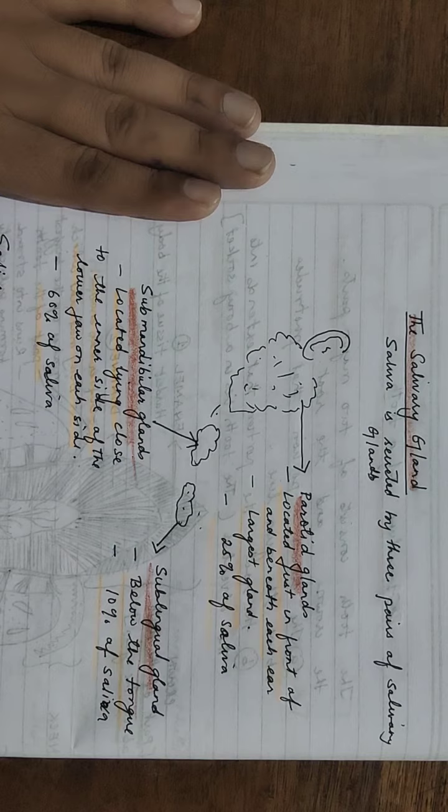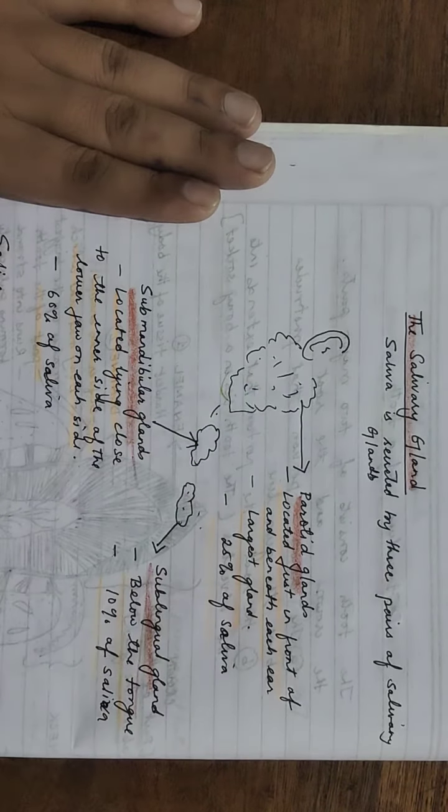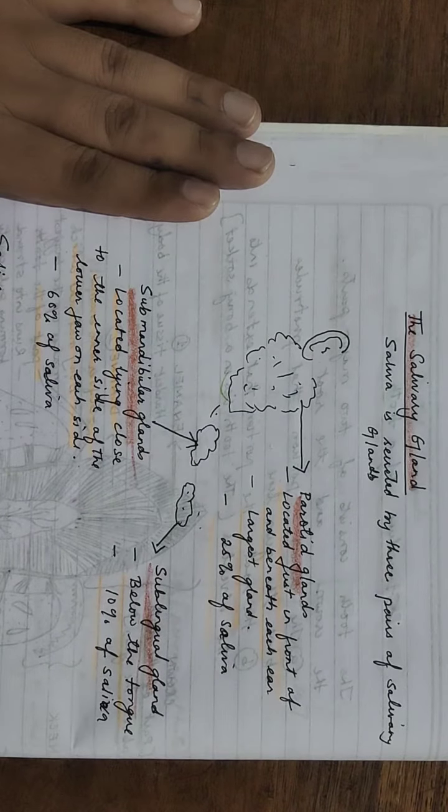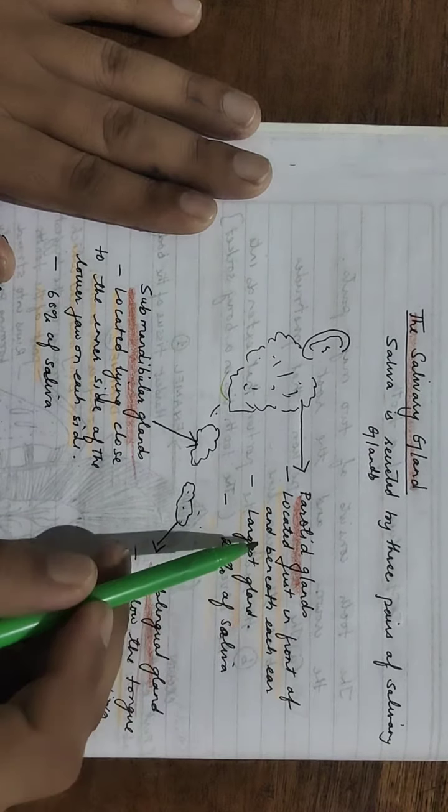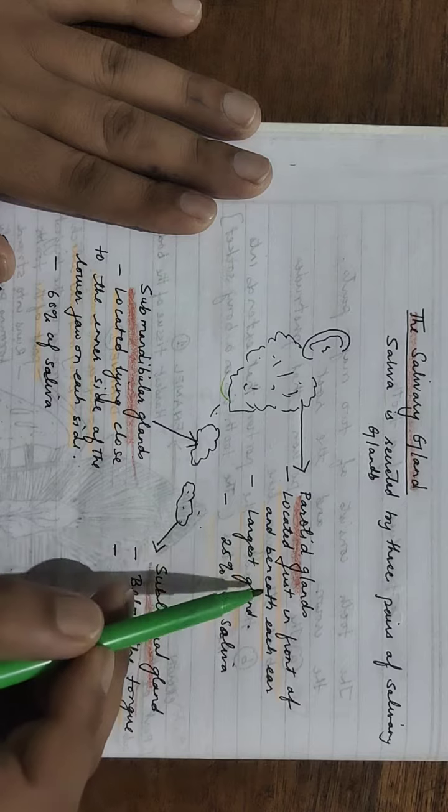We have three types of salivary glands. Next to your ear, the biggest one, is known as parotid glands. It's located just in front of and beneath each ear, and it's the largest gland.